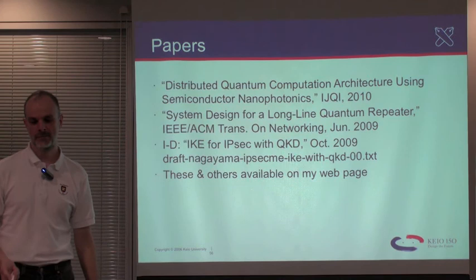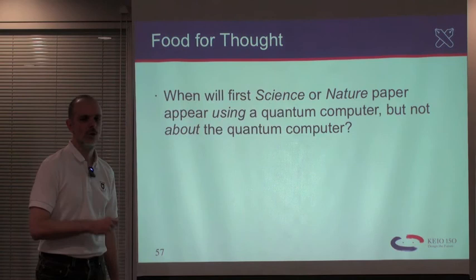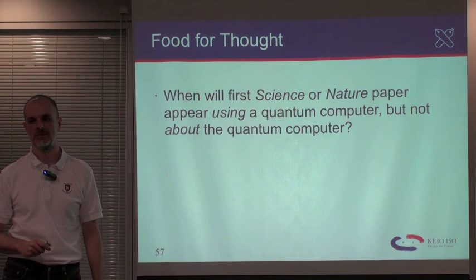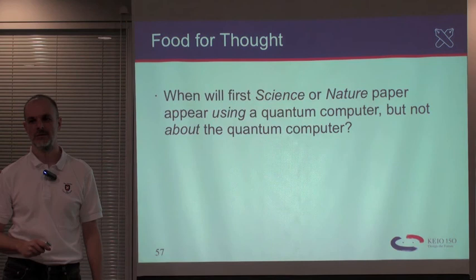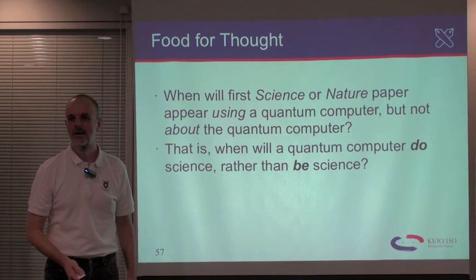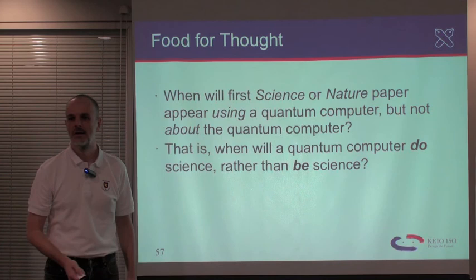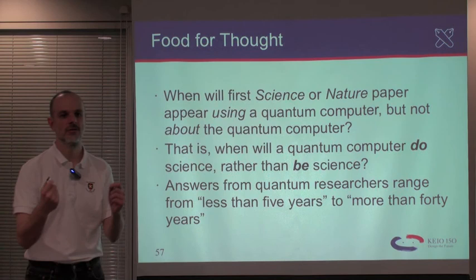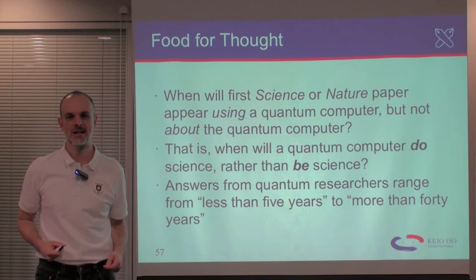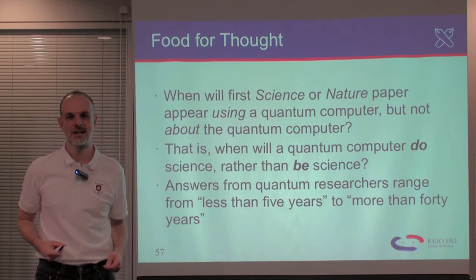Finally, I want to leave you with a little food for thought. When will the first Science or Nature paper appear where the results are calculated using a quantum computer, but the point of the paper is not the quantum computer itself? That is, when are quantum computers going to be used to do science rather than being science themselves? I've been asking people this question over the last several years, and the answers I've gotten range from less than five years to more than 40 years. I'm not going to give you an answer — I want you to think about it and potentially contribute to bringing that date in. I want that date to be as soon as possible. Thank you for your attention.